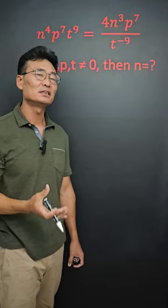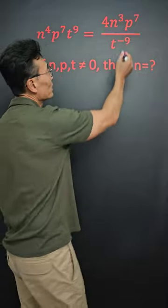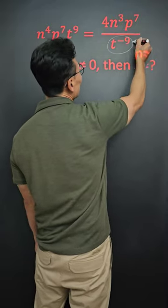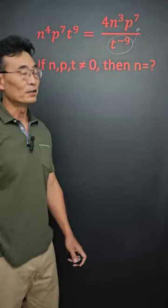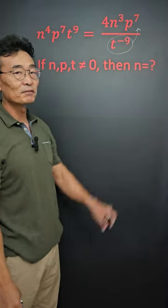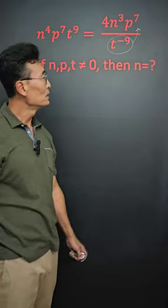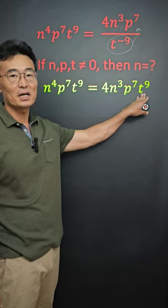When you have a negative exponent, you want to change it into a positive exponent by taking it from the denominator up to the numerator. So when that t to the negative 9 gets moved up to the top, it turns into t to the positive 9.